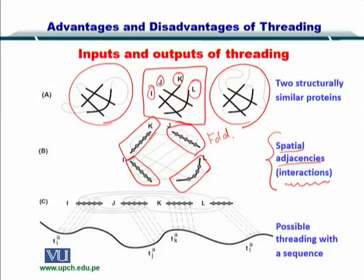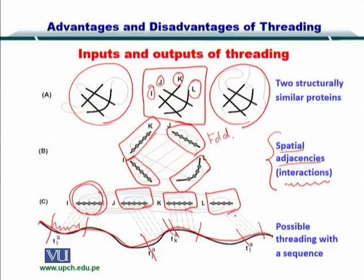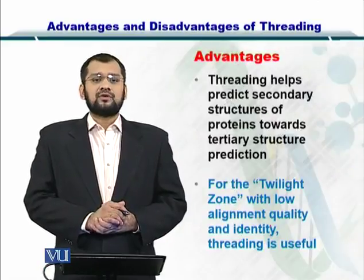If given a sequence for which you don't know the structure, then you can compare portions of this sequence to the secondary structures and declare this portion to be taking up a specific structure. Similarly, this portion will take up J, this portion will take up K, and lastly this portion of the sequence will take up the secondary structure L. In this way you have predicted the structure for this sequence.